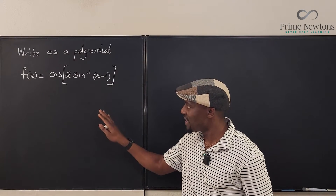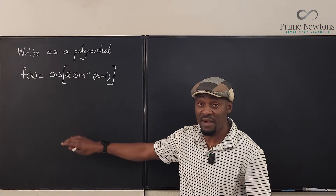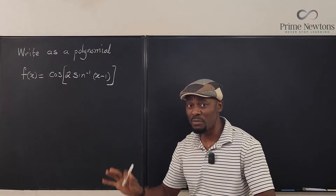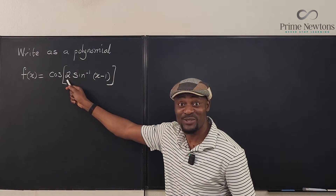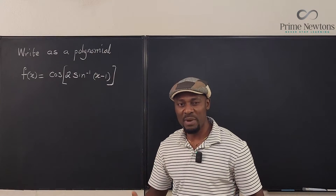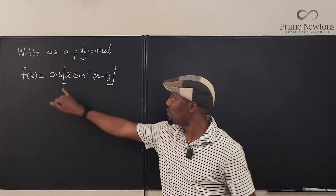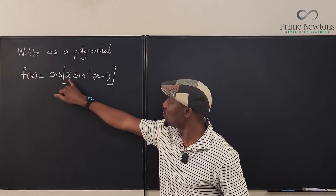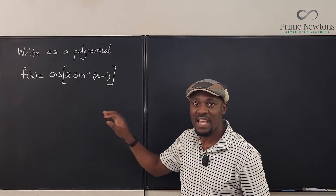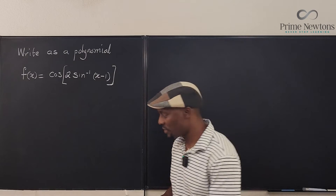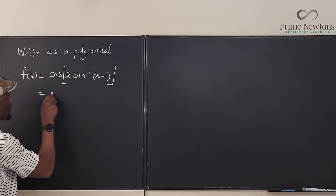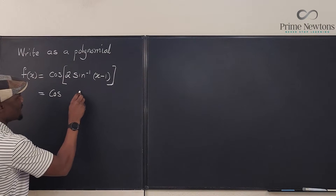Looking at this, it's a bit complicated — the fact that this and this are not the same and there's a 2 here. There's nothing you can do about this 2. So what I'm going to do is make it simpler for myself, because I know that the argument of a cosine is always an angle. Everything inside this bracket is an angle. So I'm going to say that what I have here is actually equal to the cosine of theta.